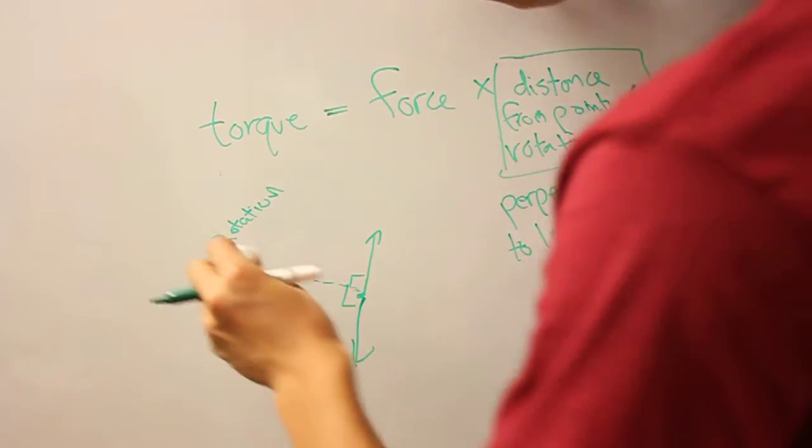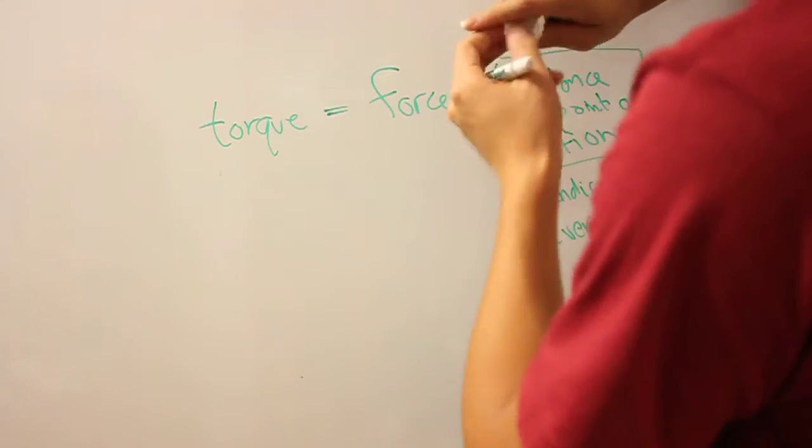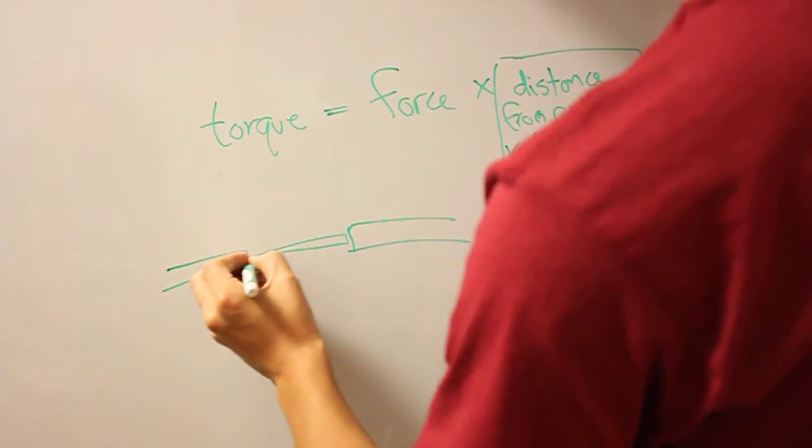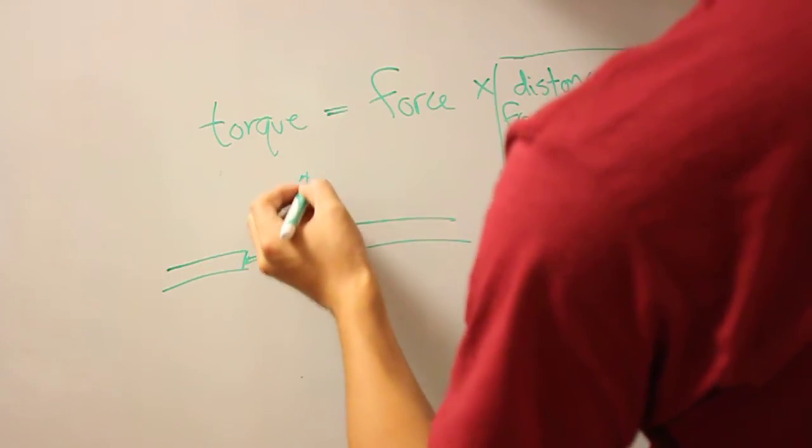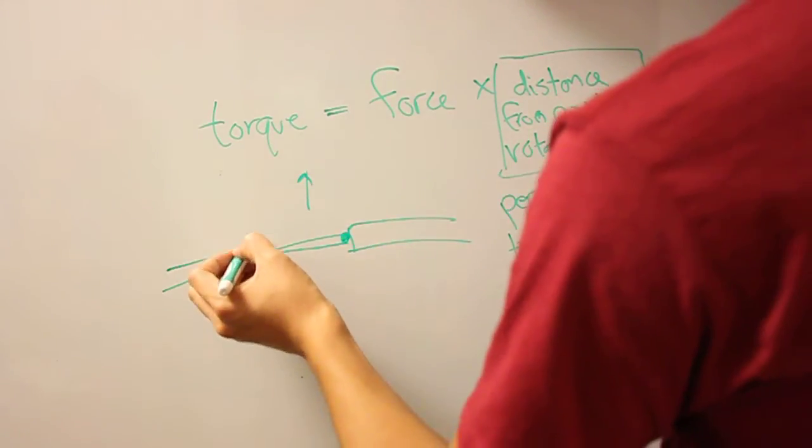The best way to conceptualize this before we get to the seesaws is, say you're opening a door. So a door, from plan view, looks like this. So this is the inside of the house, and it's hinged on one side. So when you open the door it looks like this.